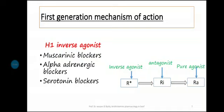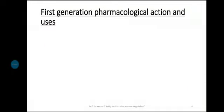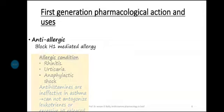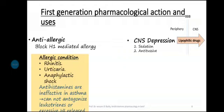The pharmacological effects and uses of first generation antihistamines: Anti-allergic — blocking H1-mediated allergy. Used in allergic conditions such as rhinitis, urticaria, and anaphylactic shock. However, antihistamines are ineffective in the treatment of bronchial asthma because other mediators play a major role compared to histamine.